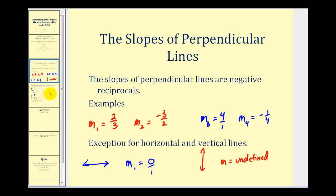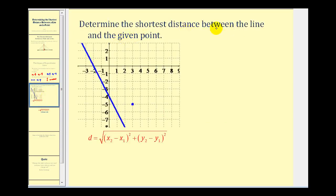Now let's look at our example. We want to determine the shortest distance between the line and the given point. The given point has coordinates three, negative five — that's going to be one end point of the segment. Our first step is to determine the slope of the given line, so we'll pick two convenient points whose coordinates are integers. We can then make a triangle to represent the change in y with respect to the change in x.